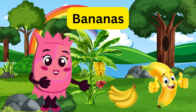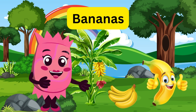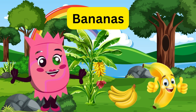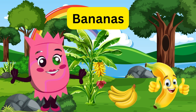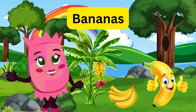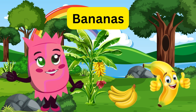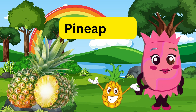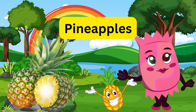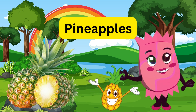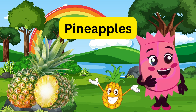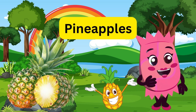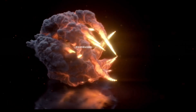Oh, look over there. What's this long curved fruit? It's a banana. Bananas are yellow and delicious. Did you know monkeys love eating bananas too? They are great for giving us energy. Wow, this tree has some big, spiky fruits. Can you guess what they are? They're pineapples. Pineapples are yellow on the outside and sweet.